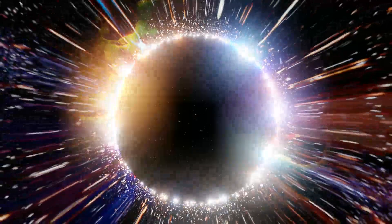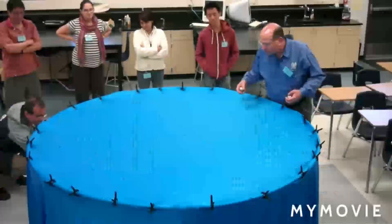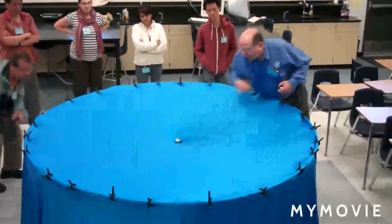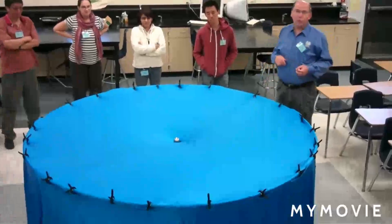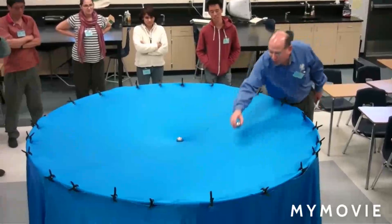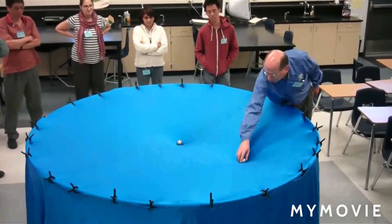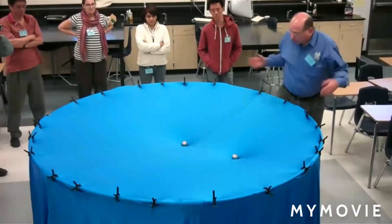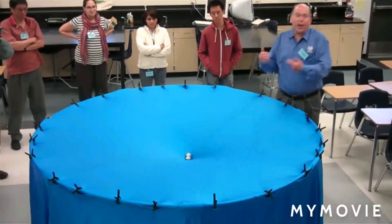We can easily understand this with the help of an example. If a heavy stone is placed on a trampoline, it will bend as you can see in this video. And after that, if anything is placed around it, it will start going towards the stone.